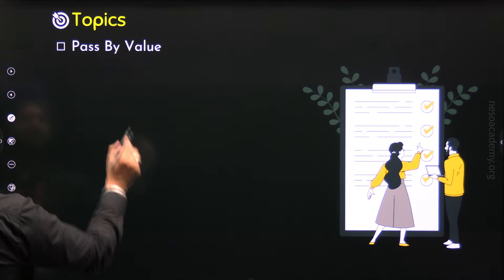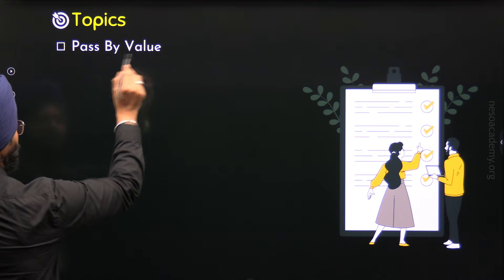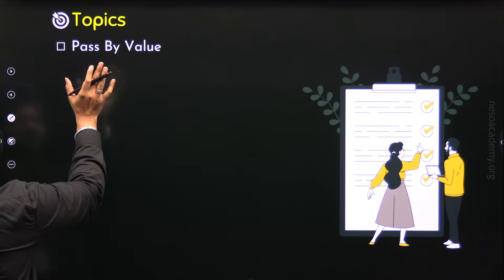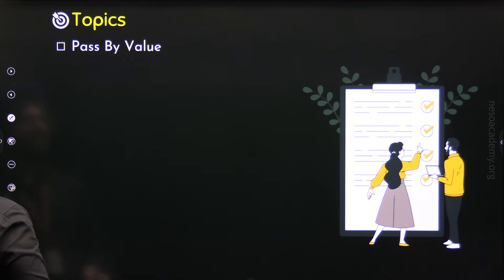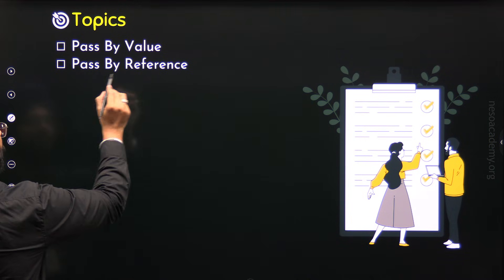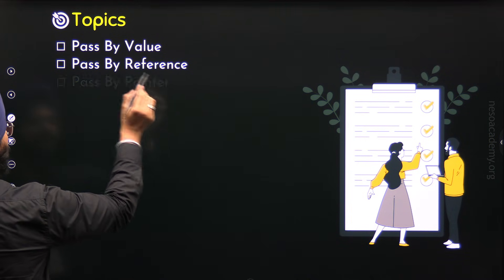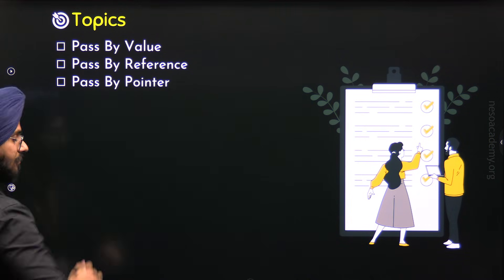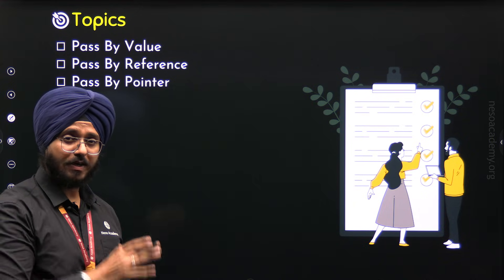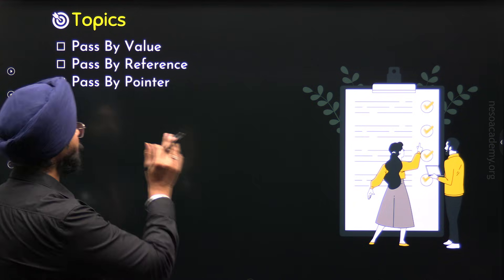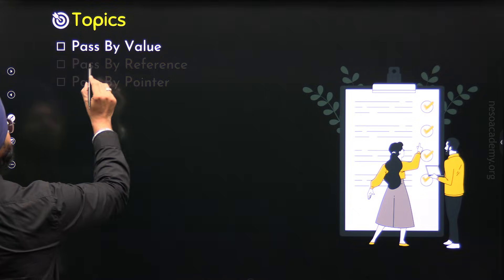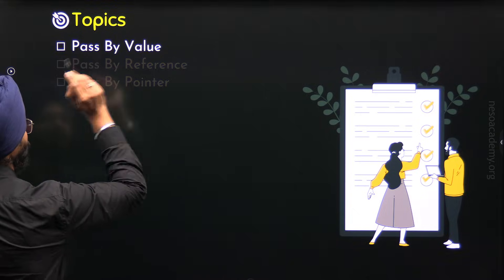The first topic is pass by value. We will understand the concept of pass by value, then we will understand pass by reference and pass by pointer. So these are the topics of this lecture. Let's start with the first one, that is pass by value.